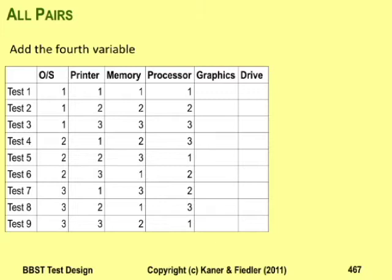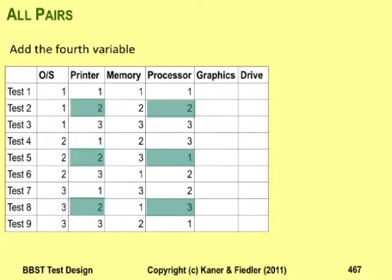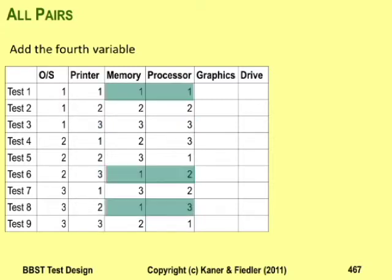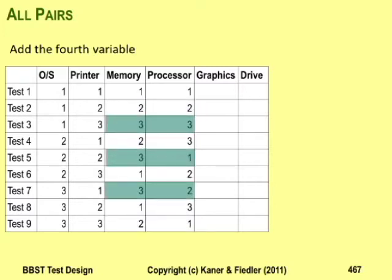Then check the printer with the processor — one with one, two, and three; two with one, two, and three; and three with one, two, and three. Finally, check the memory with the processor: one with one, two, and three; two with one, two, and three; and three with one, two, and three. At this point, you have all-pairs coverage for the first four variables.